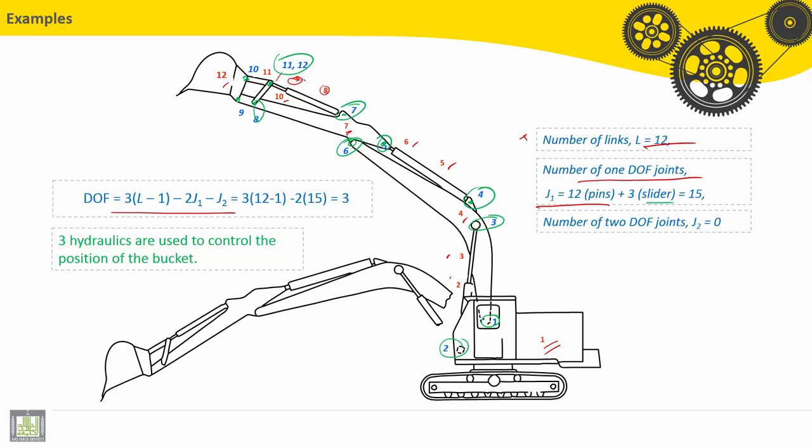And we have three sliders. Slider number one makes translation, slider number two also makes translation, slider number three. The total is 15 lower pair joints.